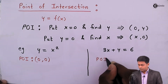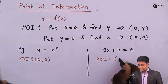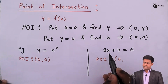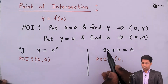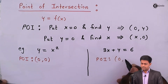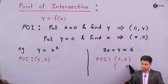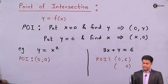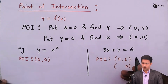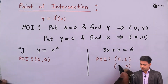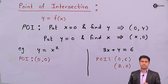Now let's take the second example: 3x plus y equal to 6. To find the point of intersection, first put x equal to 0 — then y equals 6, giving the point (0, 6). Next put y equal to 0 — then 3x equals 6, so x equals 2, giving the point (2, 0). So here we are getting two points of intersection.